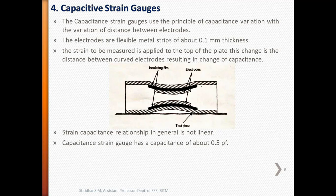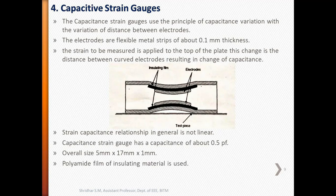The capacitive strain gauge has a capacitance of about 0.5 pF. Its overall size is 5 mm x 17 mm x 1 mm. It uses a polyamide film for insulating material and can be used up to 300 degrees Celsius. This is about the capacitive strain gauge.